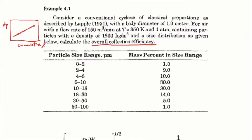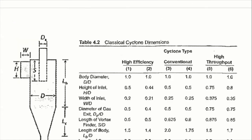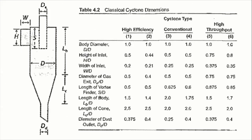We consider a conventional cyclone of classical proportions as described by Lappo. As we discussed last time, we can find all its geometry from Table 4.2 in your textbook. For this conventional cyclone, it's basically referring to these two columns.